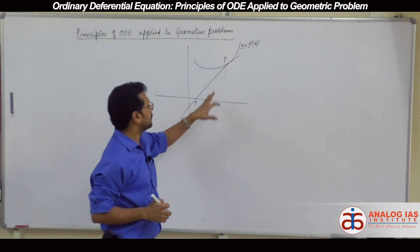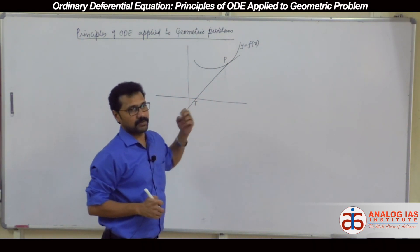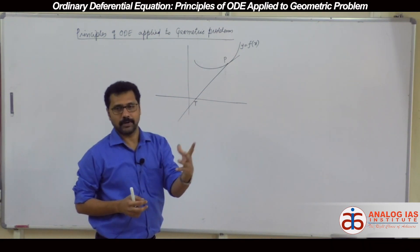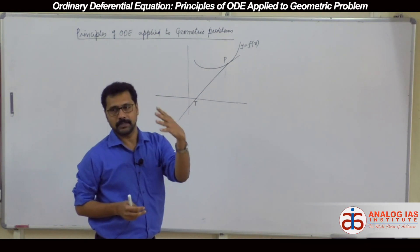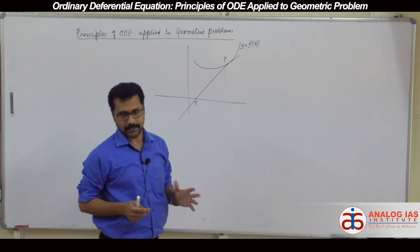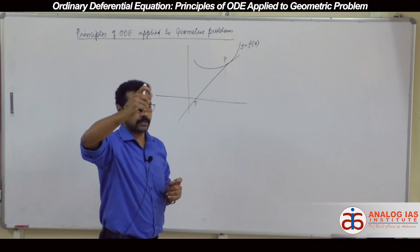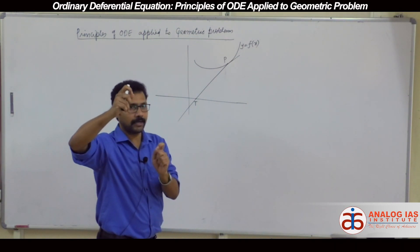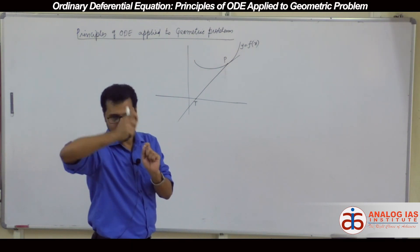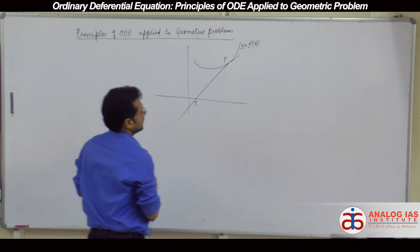It's the tangent's length. So whenever we say what is the length of the tangent, at any point you draw on a curve, you just extend the tangent to intersect the x-axis. So from the point on the curve to where it intersects the x-axis, we call it the length of tangent.